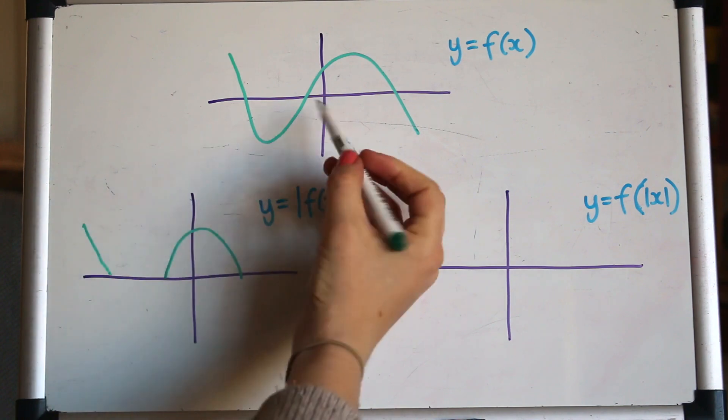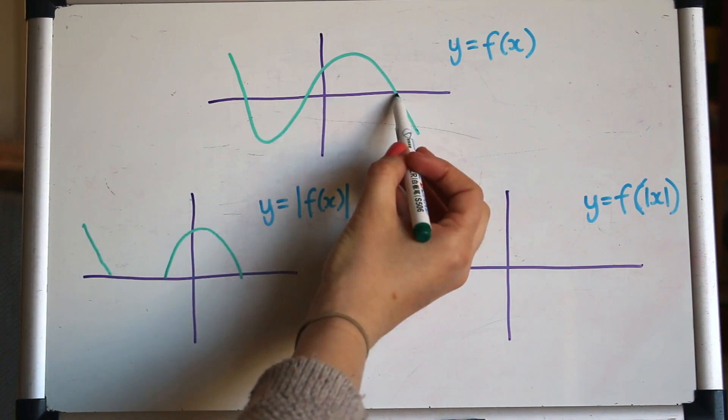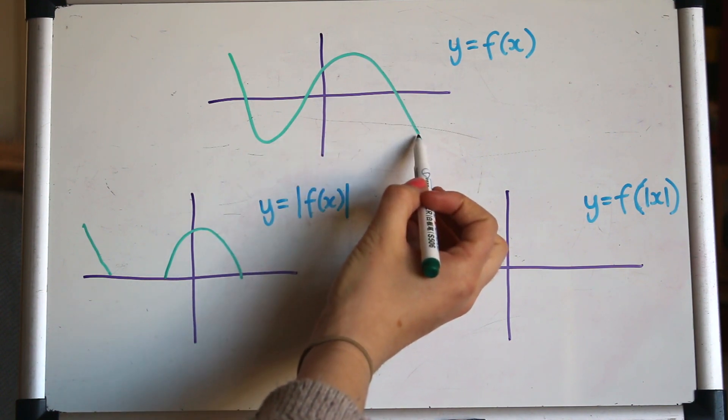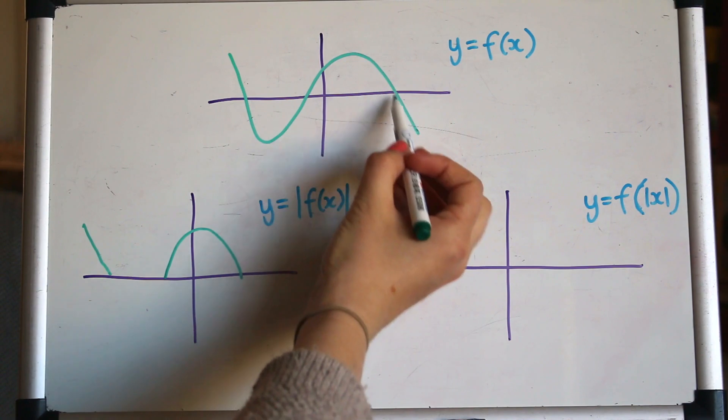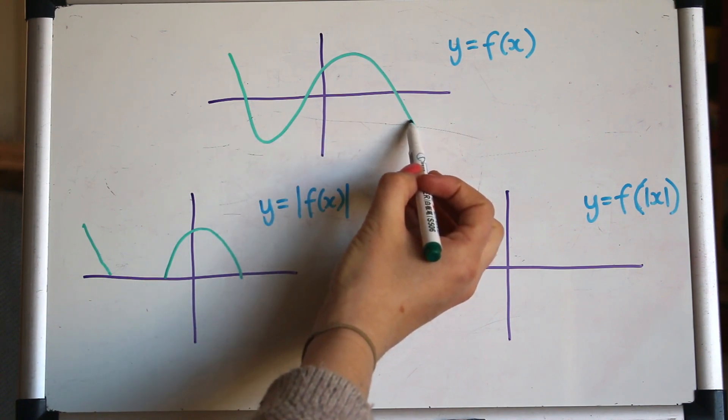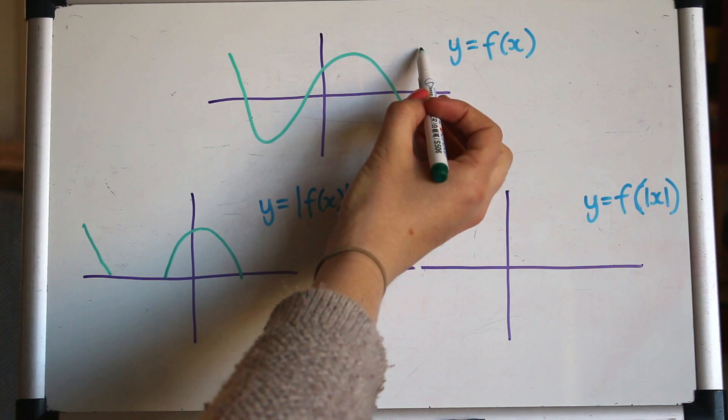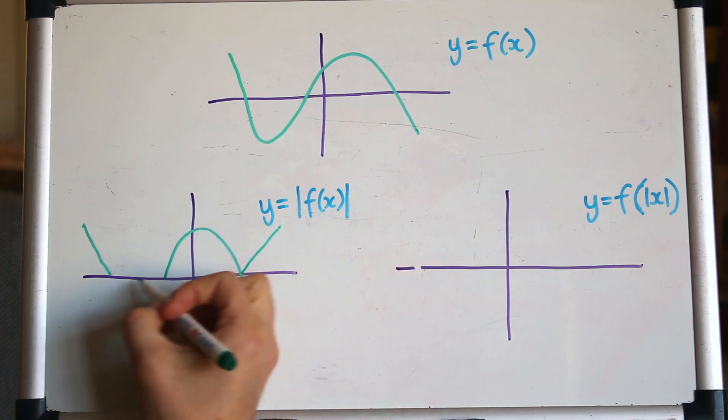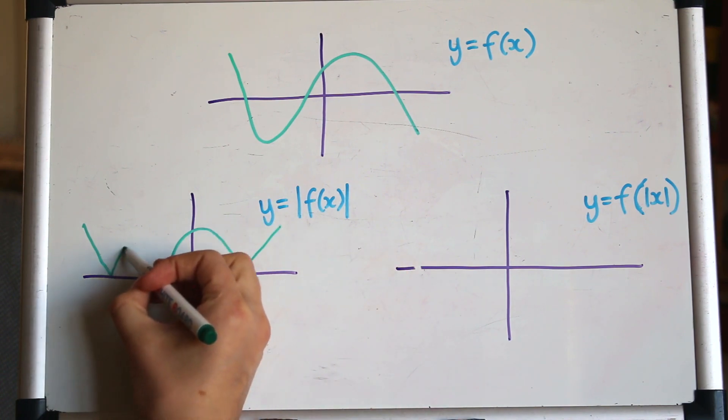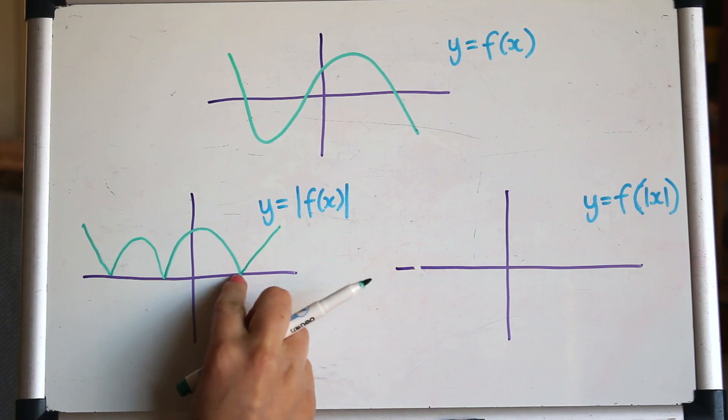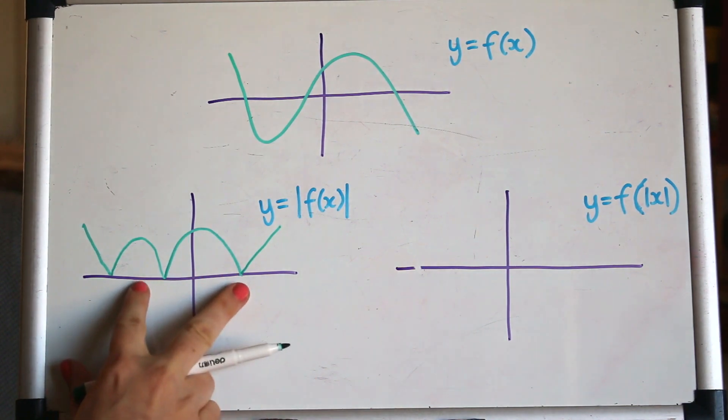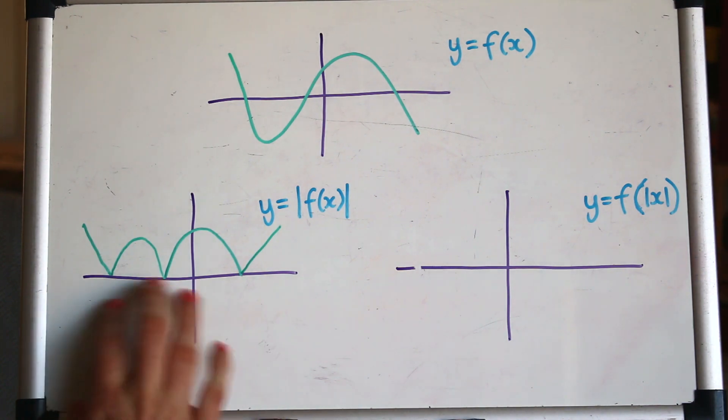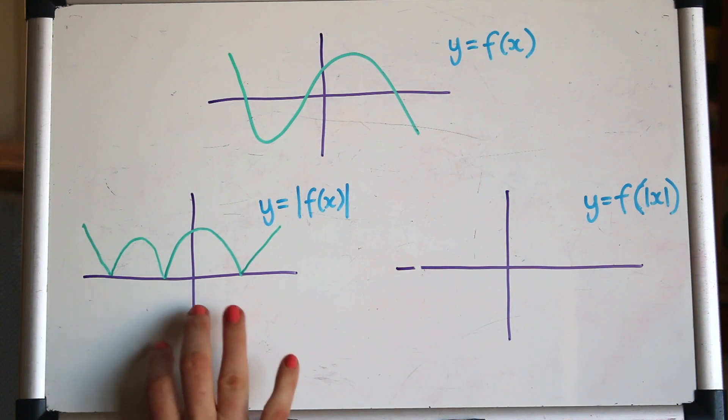And then these bits that are underneath the axis, the negative y values, they're all going to be made positive by taking the modulus of them. So if you've got a value like here that's minus 4, it's going to bounce up and become 4. Or a minus 5 would become 5. So that's how to draw the graph of the modulus function: keep the bits above the axis the same and then the bits that are below just bounce and reflect them up above the x axis. So you get some really interesting looking graphs doing that.